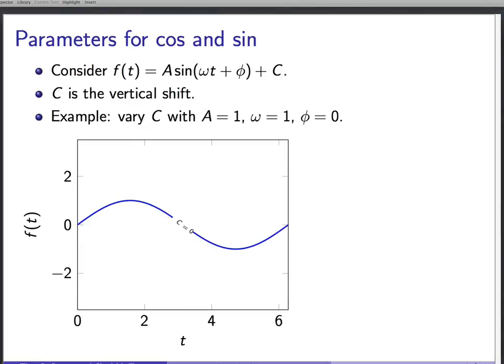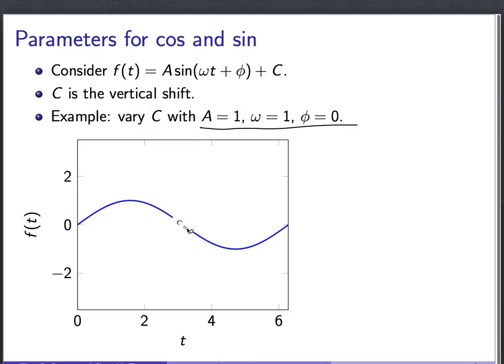Finally, C is the vertical shift. So I'm going to fix A, ω, and φ at these values. I'm going to show you graphs of the function, starting with C equals zero. Notice that this function is sort of centered around a vertical value of zero.